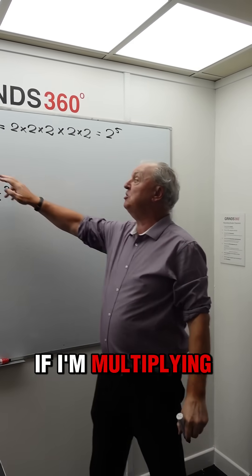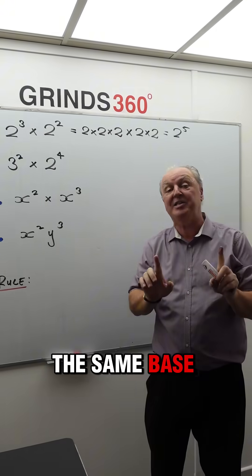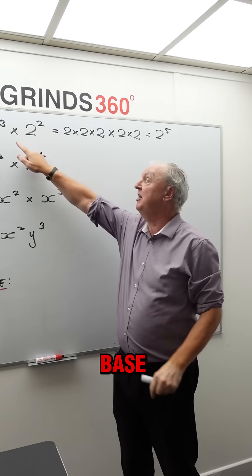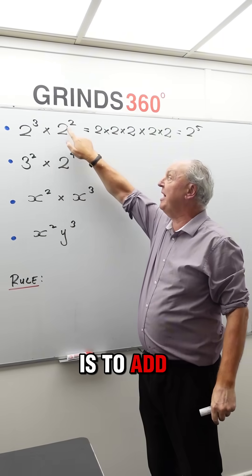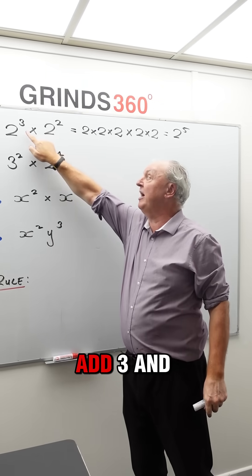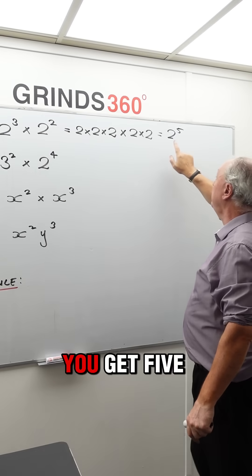So basically, if I'm multiplying two numbers with the same base—and that's important, they have to have the same base—then all I have to do is add the powers, because if you add 3 and 2, you get 5.